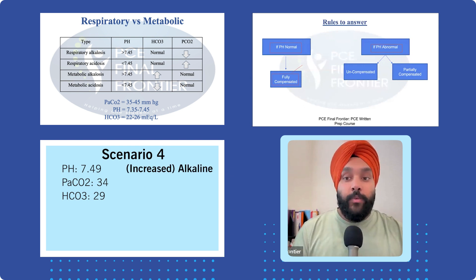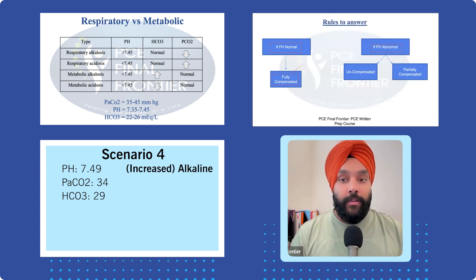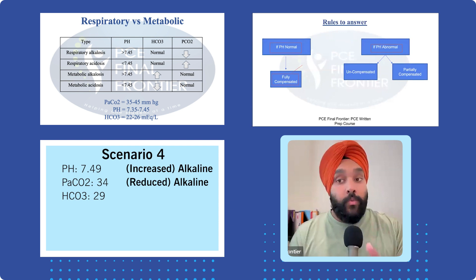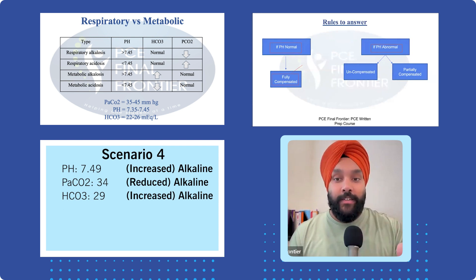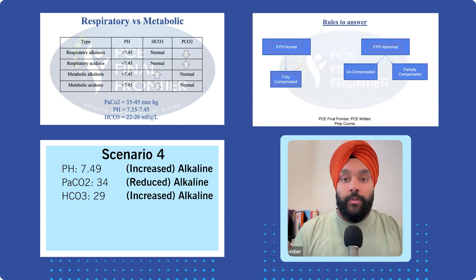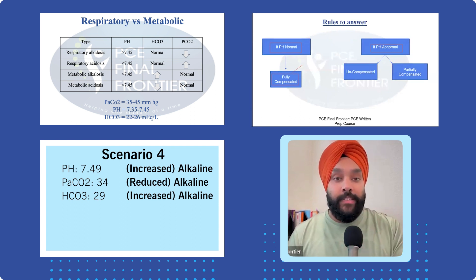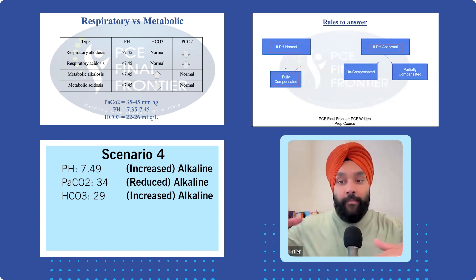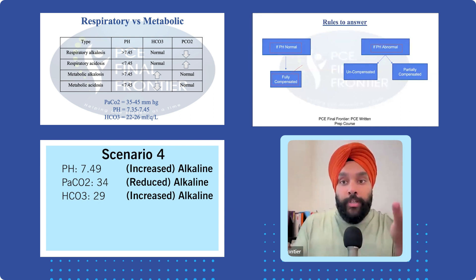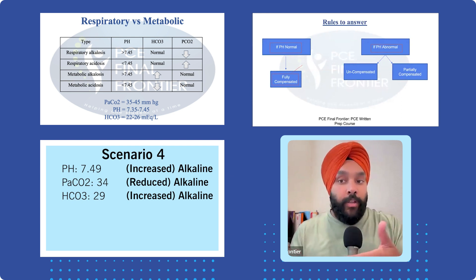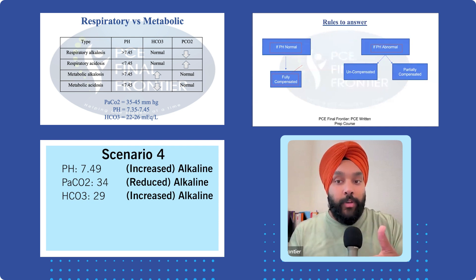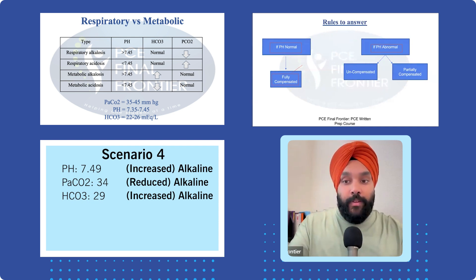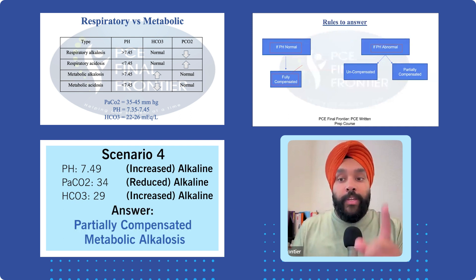Carbon dioxide is 34, which is reduced — towards alkaline. Bicarbonates are 29, which is increased — also alkaline. Carbon dioxide reduced by one point; bicarbonates increased by three points. So who's winning the game? The pH is still abnormal. Bicarbonates are trying more because they're changing by three points, so this is called partially compensated metabolic alkalosis.